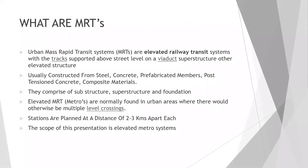Now coming to our main topic: metros. They are actually called MRTs — Urban Mass Rapid Transit Systems. These are elevated railway transit systems with the tracks supported above the street level on a viaduct superstructure or any other elevated structure. The materials used to make these viaducts are usually steel, concrete, prefabricated members, post-tensioned concrete, or a mixture of more than one material — for example, the girder might be steel while the deck slab would be concrete.